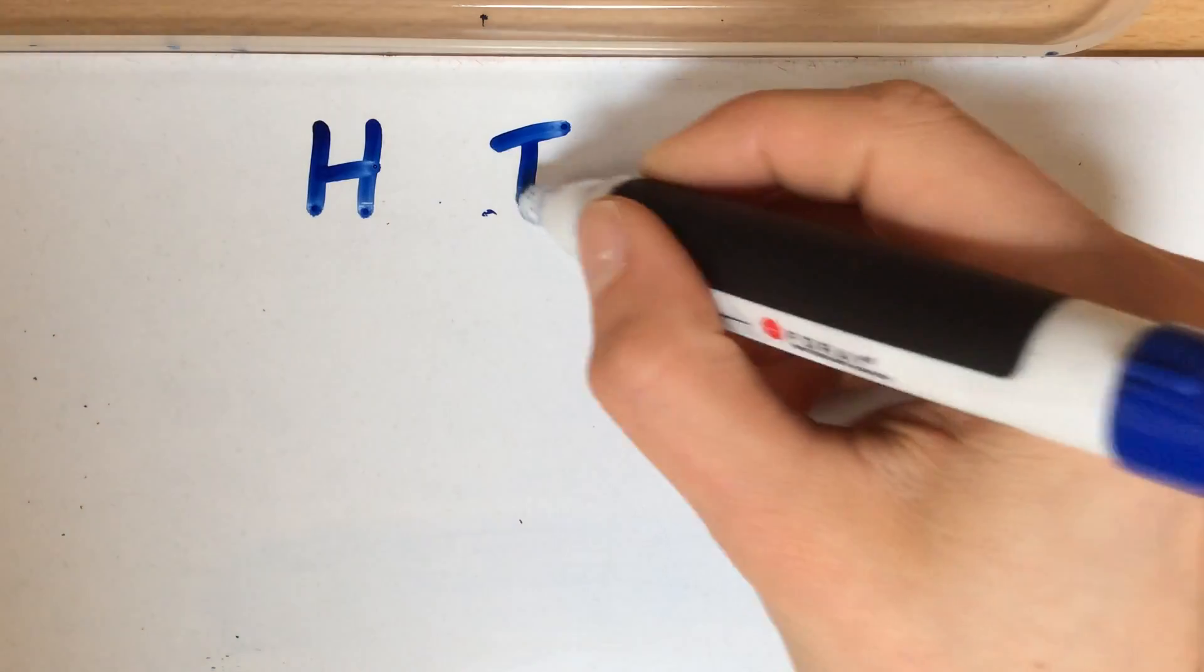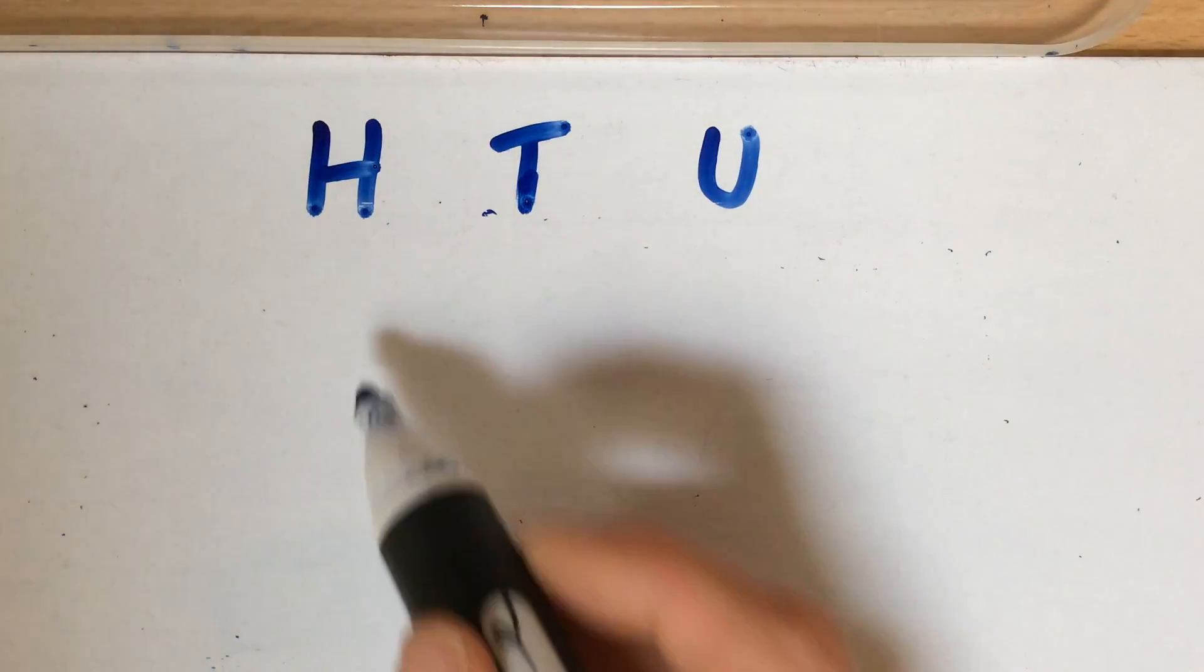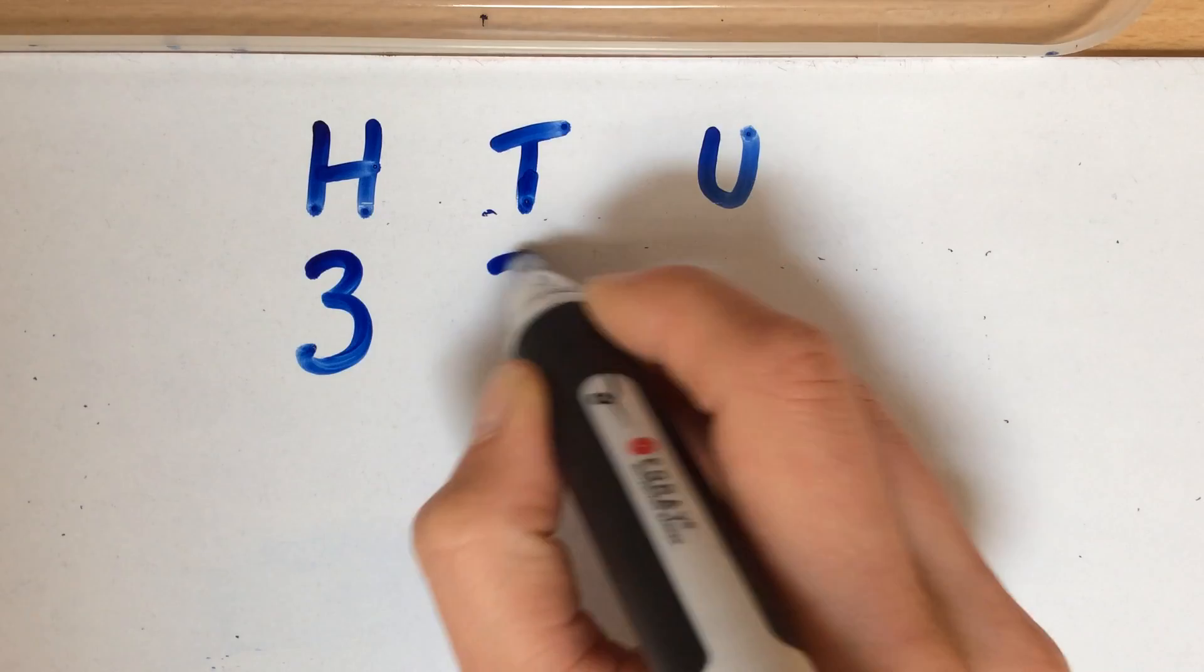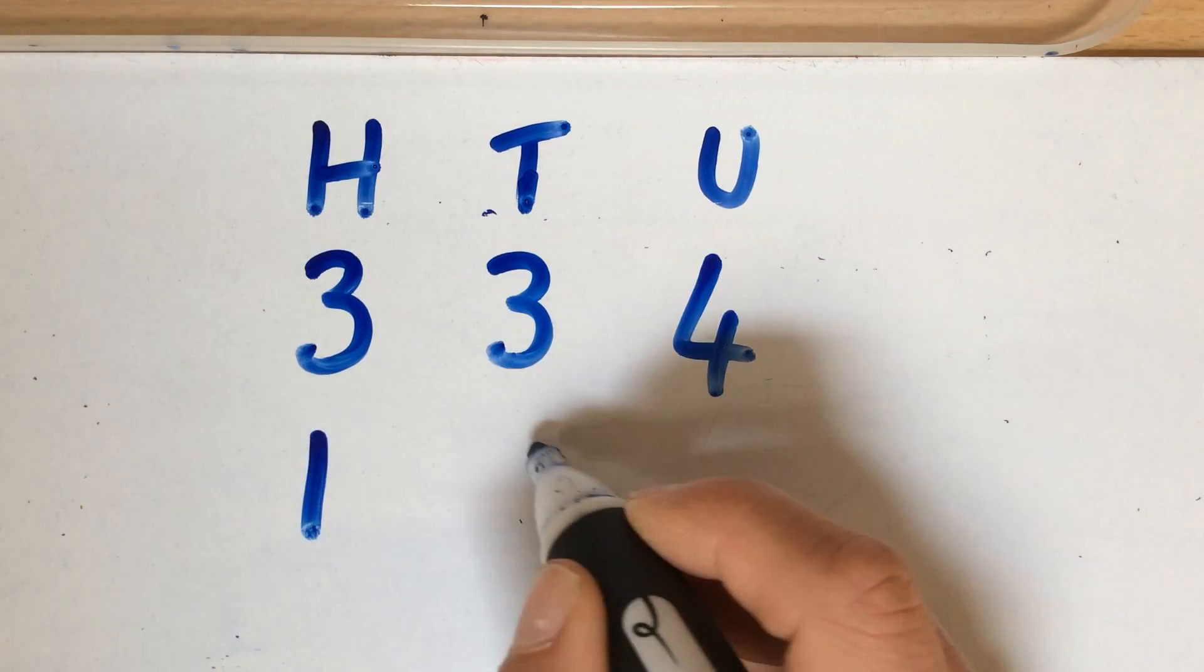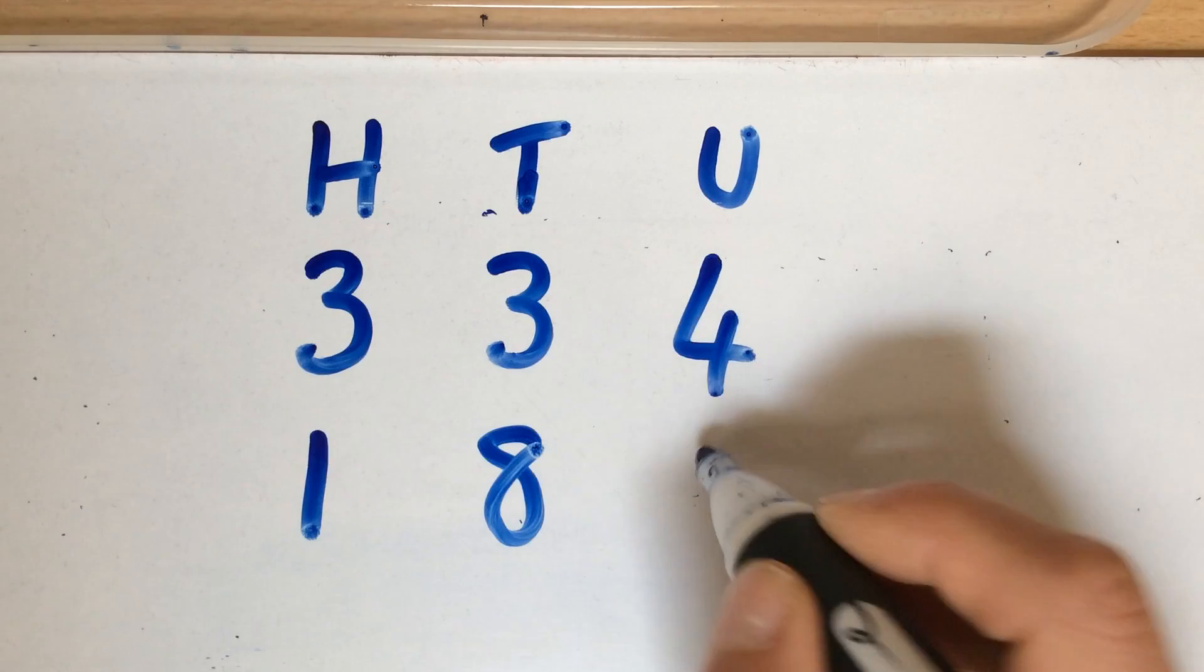Another example that would need to be gone through is if we've got 334 take away 186.